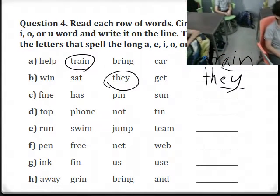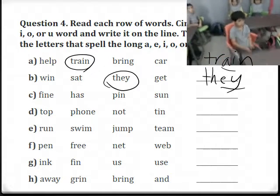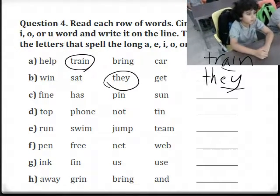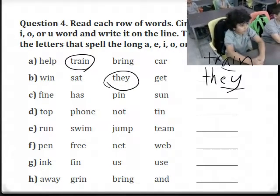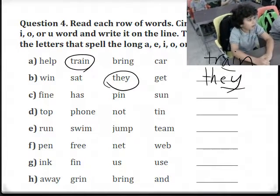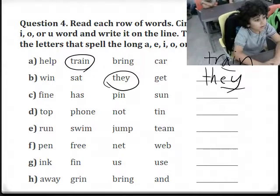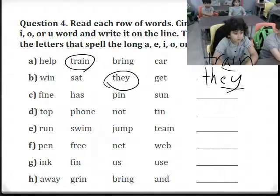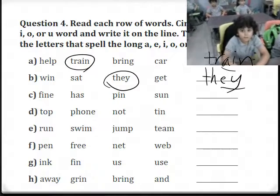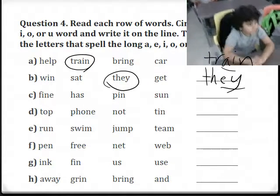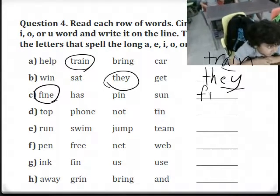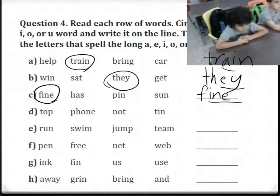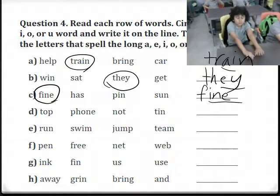Next row, Adam. The words include 'fine.' Which word has a long sound? Fine. Which sound do you hear? I — very good. So we circle 'fine,' write it on the line. What do we underline? I and E — because the I, consonant, E makes the long I sound.